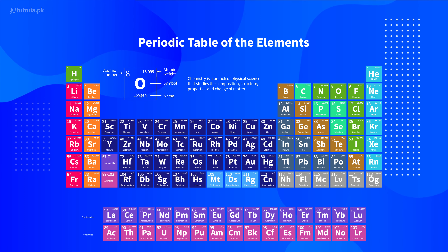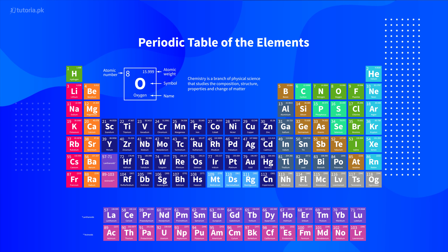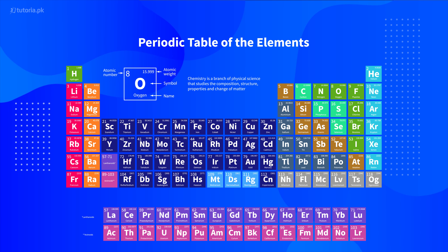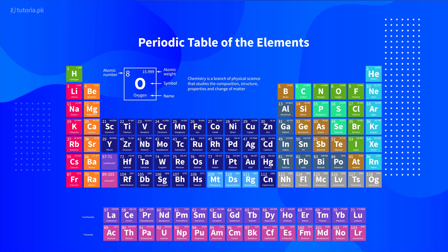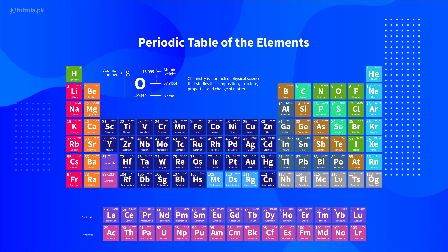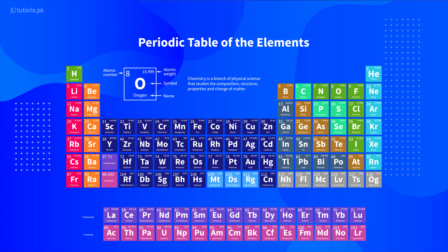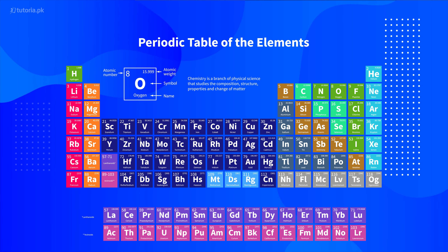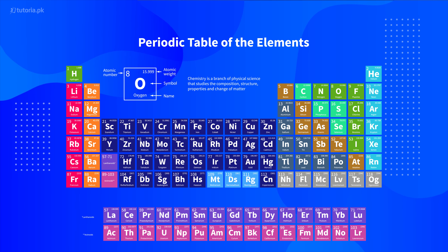Group 5A elements are nitrogen, phosphorus, arsenic, antimony, and bismuth. Group 6A elements are oxygen, sulfur, selenium, tellurium, and polonium.